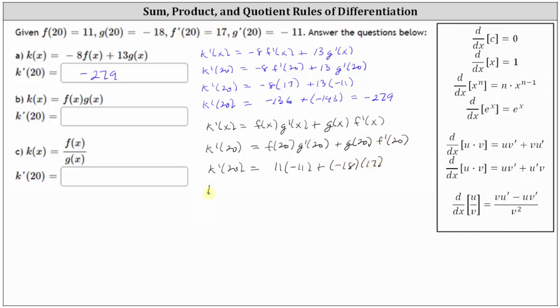Again, simplifying, we have k prime of 20 equals negative 121 plus negative 306, which is equal to negative 427.